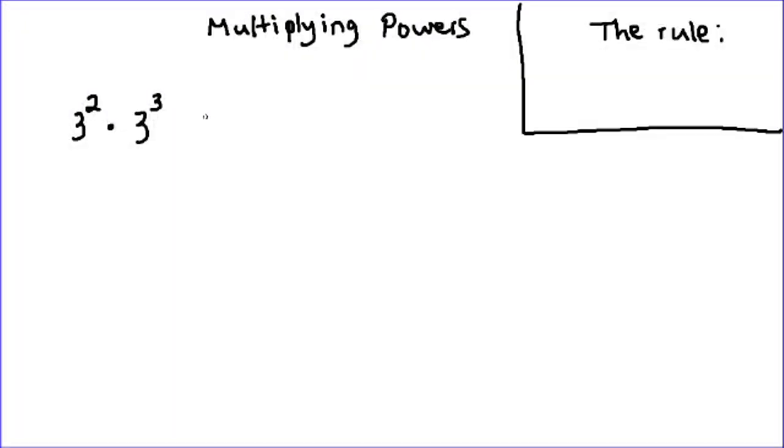In this tutorial we're going to take a look at how we can simplify 3 squared times 3 to the power of 3 using an exponent rule that focuses on multiplying powers with the same base. The first thing that we need to keep in mind here is to use this particular rule, the multiplying powers rule, you need to make sure that the base is the same for both of your powers.